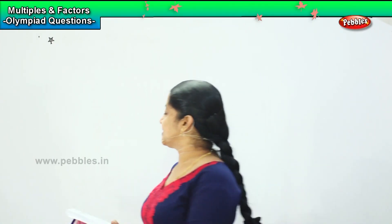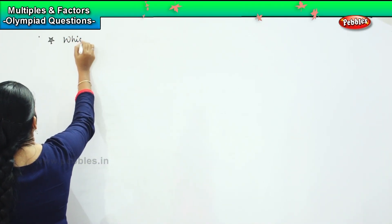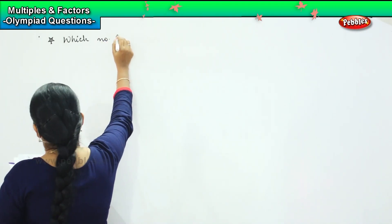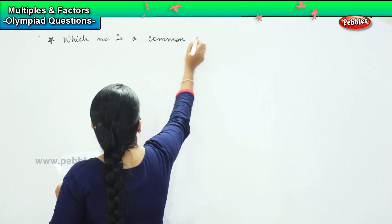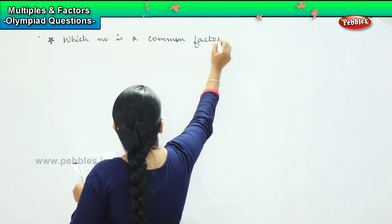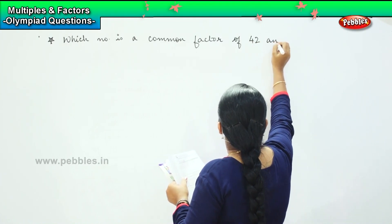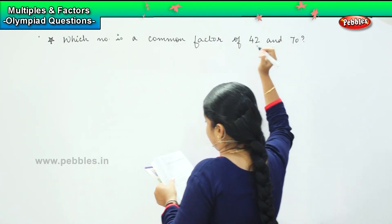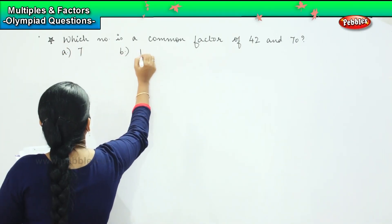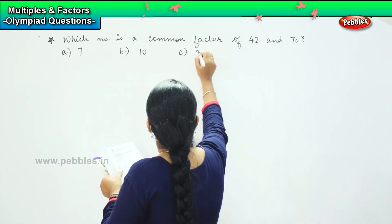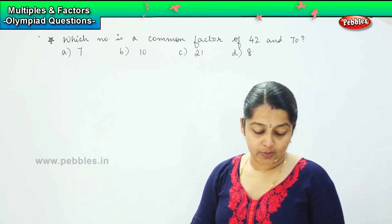The next question for you is: which number is a common factor of 42 and 70? Your options are A: 7, B: 10, C: 21, and D: 8. It's an easy question, right?